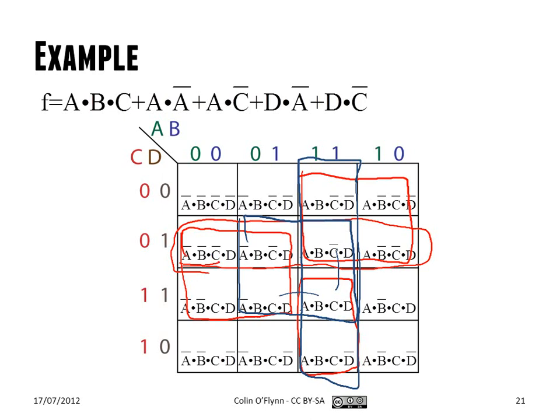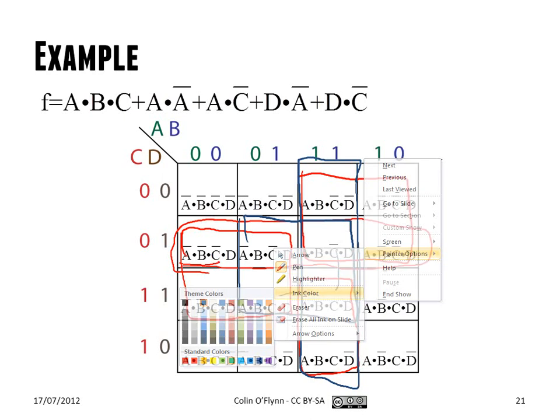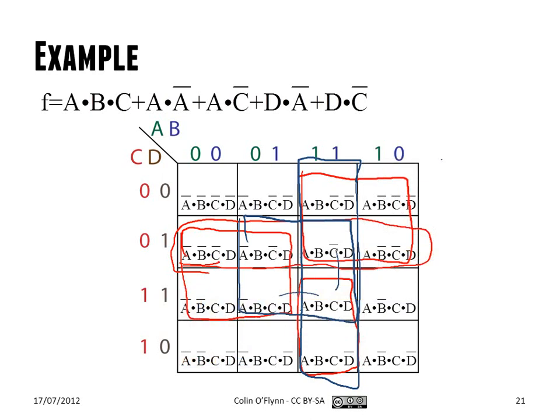So although I could have here just done two this way, two that way, it's better for me to select a whole bunch at once. And then I also have to remember that there actually was another hazard here. So there was this product term, and then this one, that are also connected around the side here. So this large rectangle here, encompassing all four, eliminates that hazard. Because the same product term is connected at this point and this point.